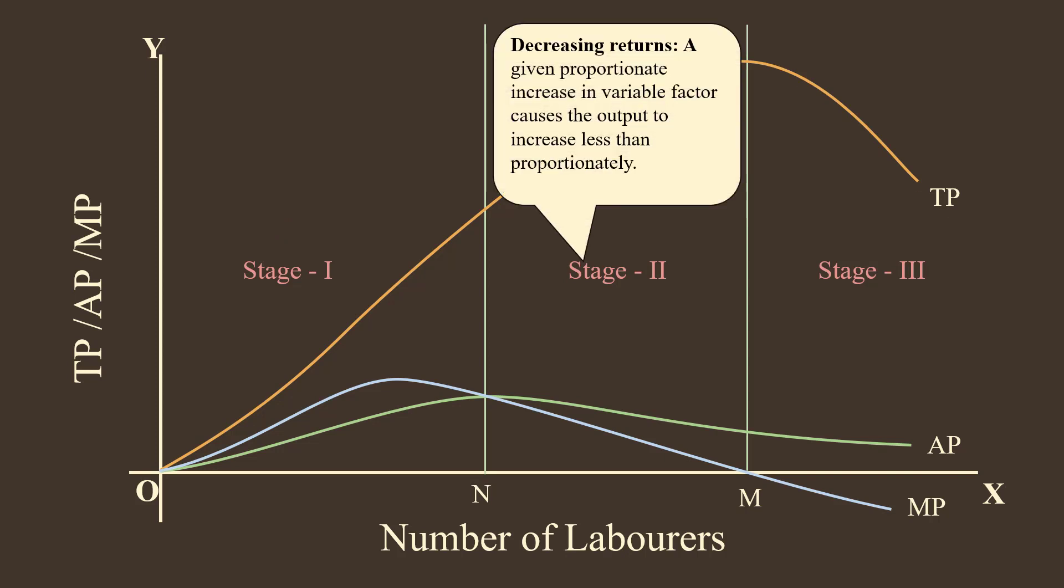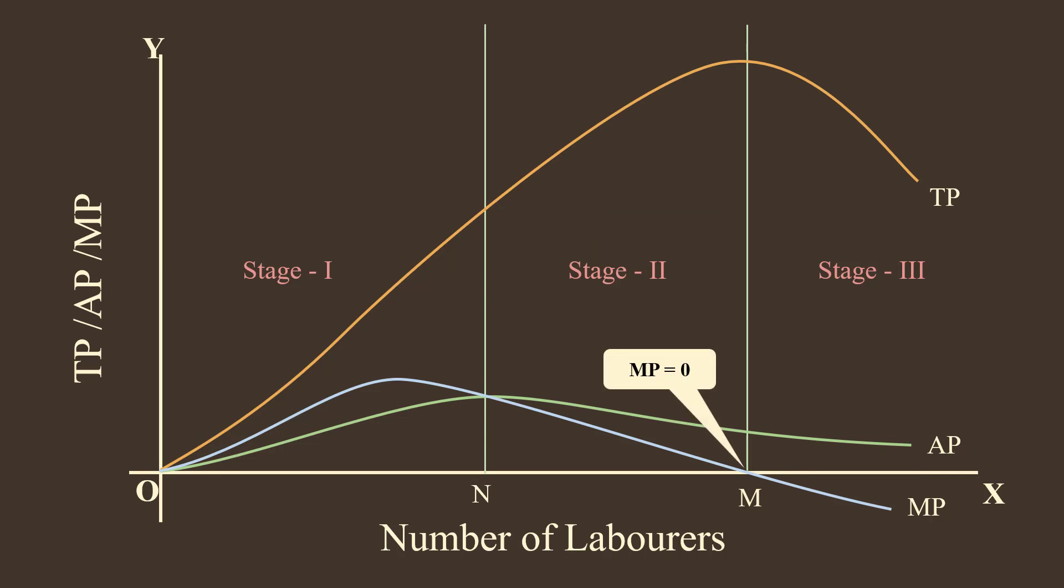Stage 2: Decreasing Returns Stage. In this stage, a given proportionate increase in variable factor causes the output to increase less than proportionately. This stage ends when marginal product becomes zero or it cuts the x-axis.